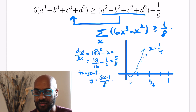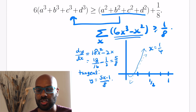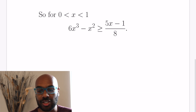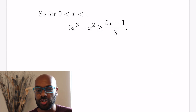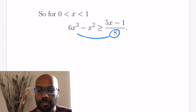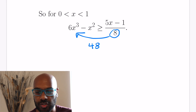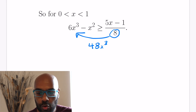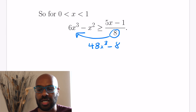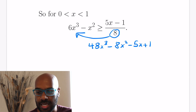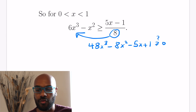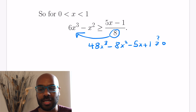From the graph and the tangent line, we see that 6x³ - x² dominates (5x - 1)/8 on the interval [0, 1]. But since we used calculus, and we often want an elementary proof, we move the 8 over to the other side and rearrange. We need to prove that 48x³ - 8x² - 5x + 1 is greater than or equal to 0.